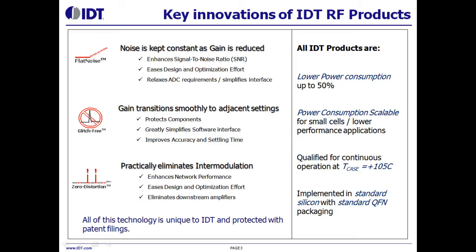Flat noise keeps noise constant as gain is reduced in gain control devices. Glitch-free makes gain transition smoothly to adjacent gain settings in digital gain control devices. Zero distortion practically eliminates intermodulation, improving linearity. These technologies contribute to reducing device power consumption significantly, up to 50%.